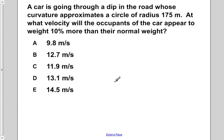A car is going through a dip in the road whose curvature approximates a circle of radius 175 meters. At what velocity will the occupants of the car appear to weigh 10% more than their normal weight?